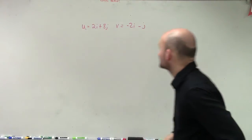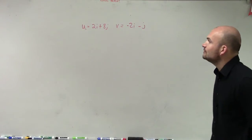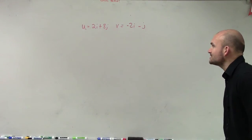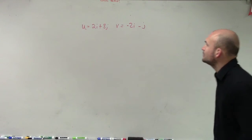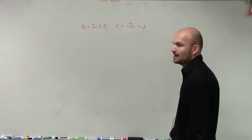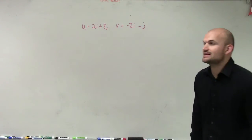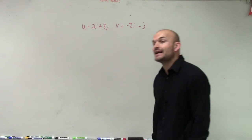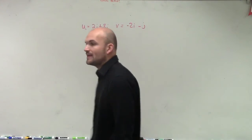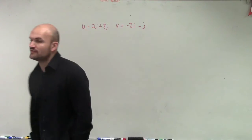We have u equals 2i plus 8j, and v equals negative 2i minus j. What we're asked to do is find the angle between the two vectors.